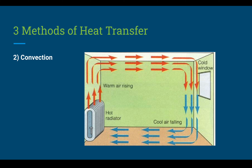Here is a simple diagram of a convection current. The hot radiator heats up the particles, and warm air tends to expand, which reduces its density, allowing the air to rise up. Once it has risen, it starts to cool down, becomes denser, and sinks, causing this cycle to repeat — and this is just one example of it happening.